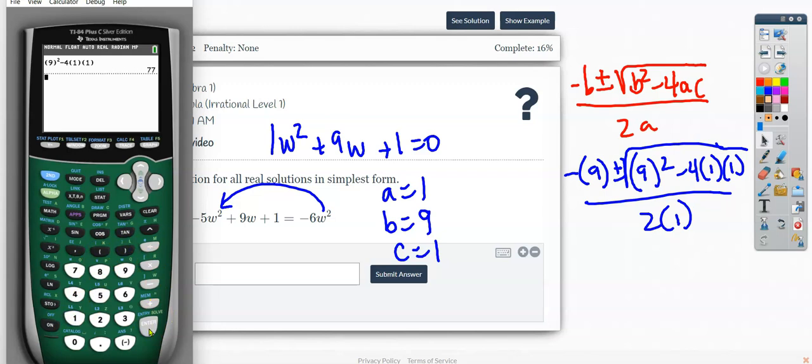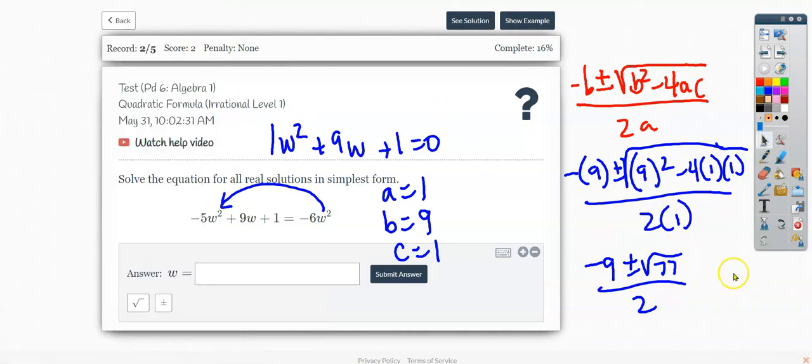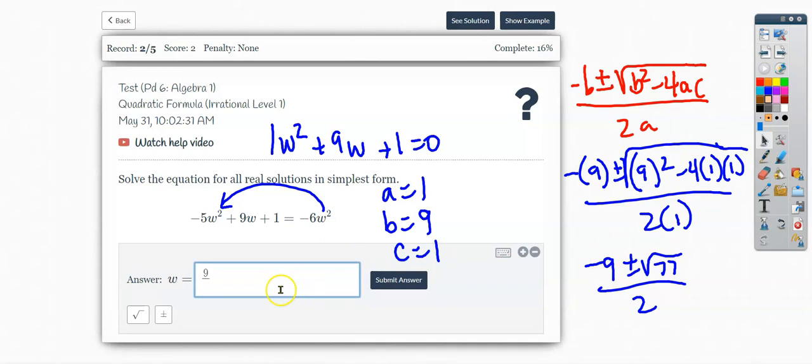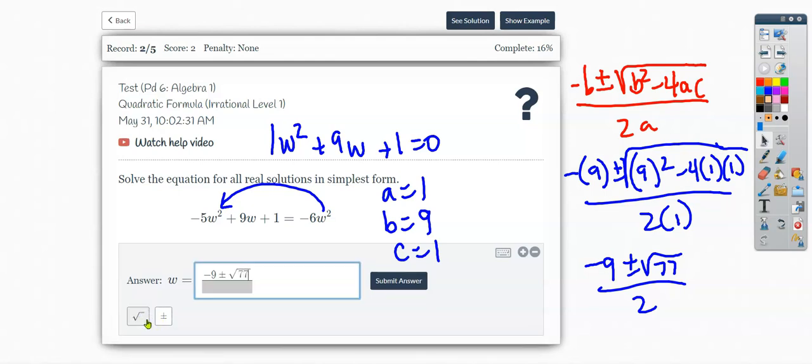So negative 9 plus or minus the square root of 77 all over 2. Now, I know that 77 only has factors of 7 and 11, and neither one of those is a perfect square. So I'm going to write this entire fraction as my answer. I'll write 9 in a fraction bar first, then go back and put in my negative sign, my plus or minus sign, my square root of 77. And because I put that fraction right away, I'll get the 2 to go underneath everything.